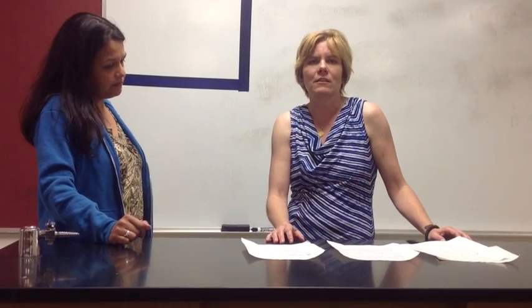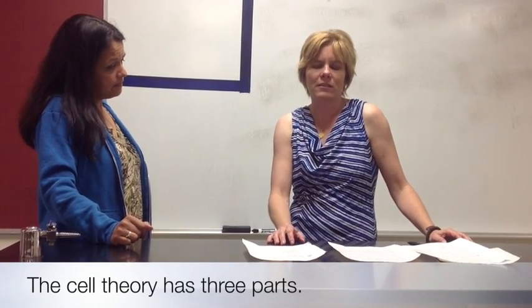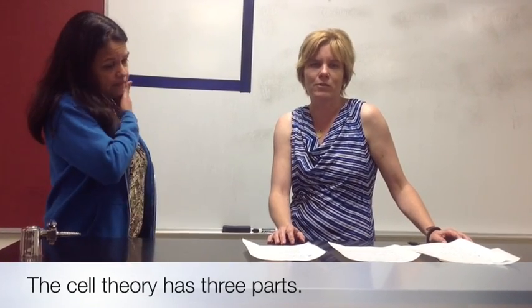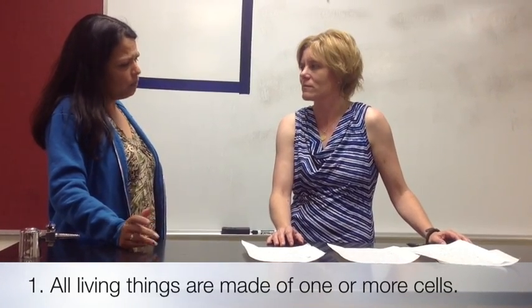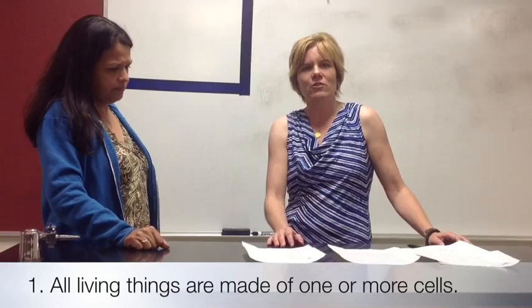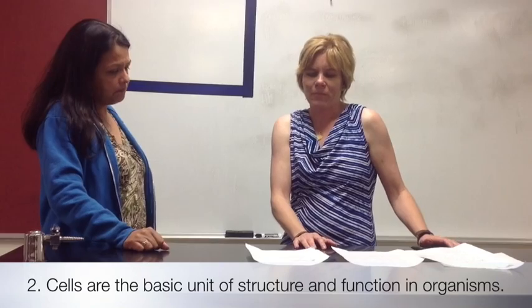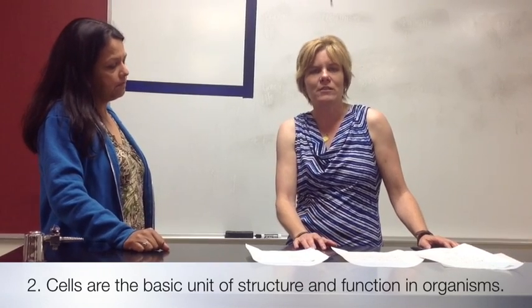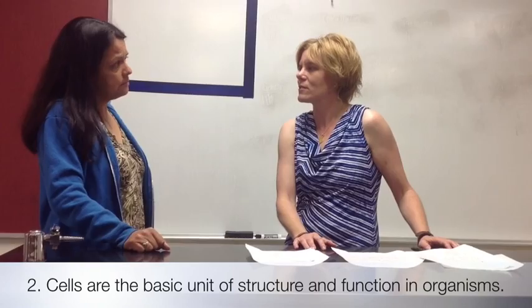The parts of the cell theory are: all living things are made of one or more cells. Cells are the basic unit in structure and function of organisms. Structure is how things are built, and function is what things do. The last thing is that all cells arise from pre-existing cells.